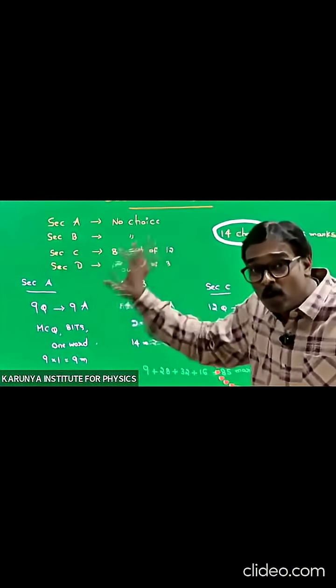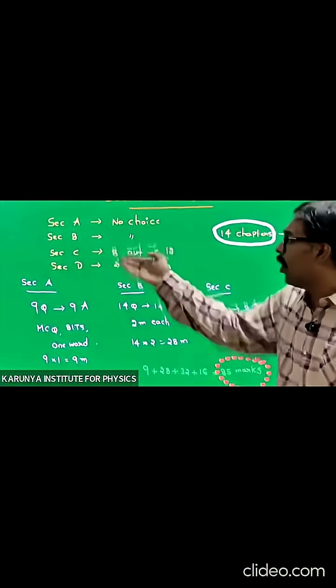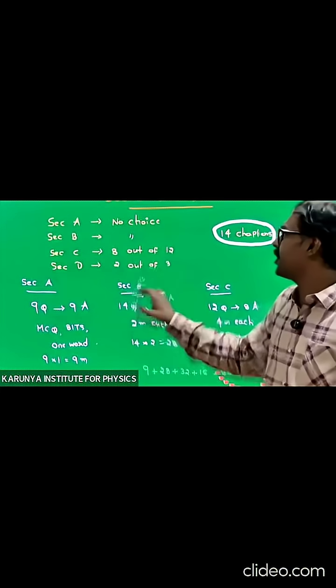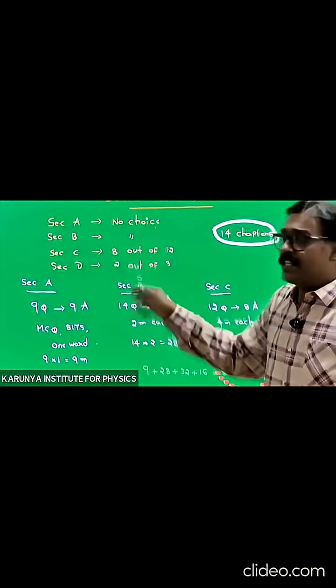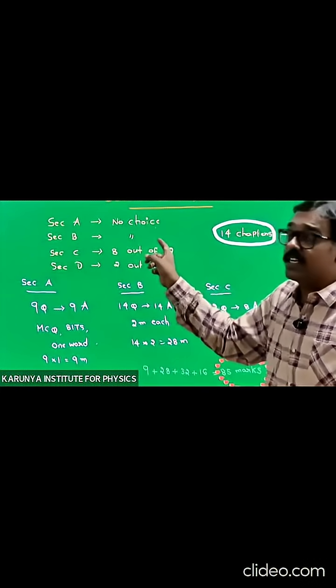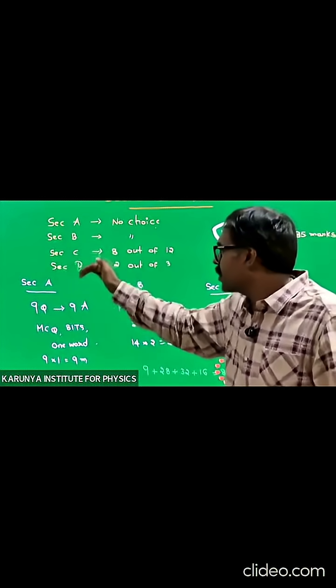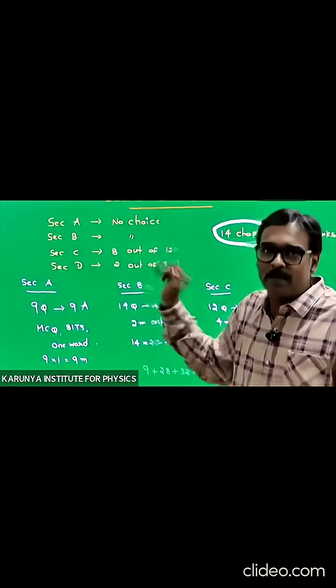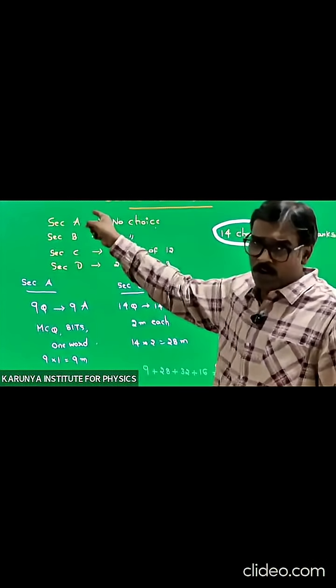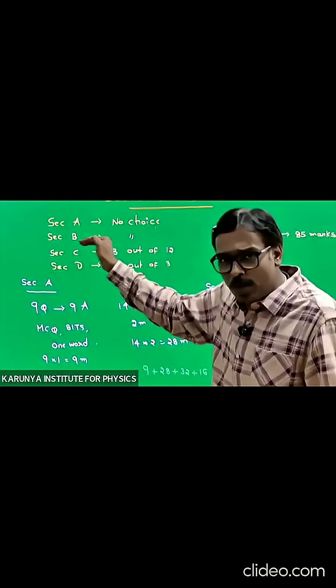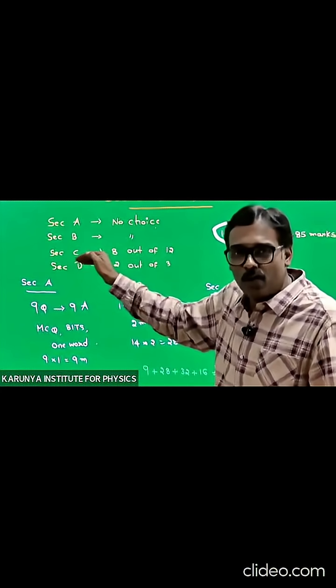The intermediate board releases the question paper pattern with four sections. Section A has no choice. Section B has no choice. Section C has eight questions, answer any. Section D has three questions, answer two. Section A has one mark questions, Section B has two marks questions, Section C has four marks questions, and Section D has eight marks questions.